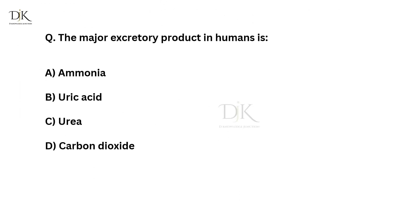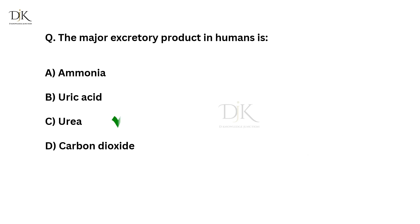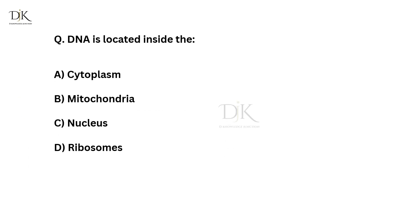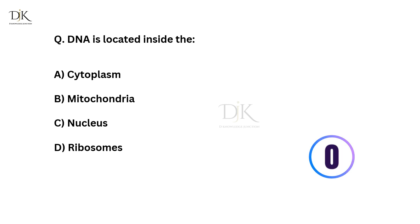The major excretory product in humans is? The right answer is urea. DNA is located inside the? The right answer is nucleus.